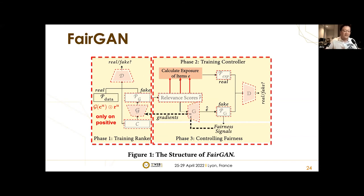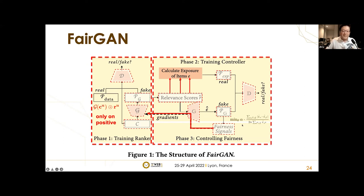Phase three considers generating fairness signals. Since the computation of the real exposure distribution is not differentiable with respect to G of the ranker, we cannot directly update its parameters to minimize IED. Fortunately, the controller's G has captured the target exposure distribution. Due to the relationship between G of ranker and G of controller, we can adapt G of ranker via E-hat — fixing G of controller and directly updating G of ranker to reduce disparity by minimizing IED of E-hat. The controller is flexible enough to apply other fairness objectives, including non-differentiable ones.